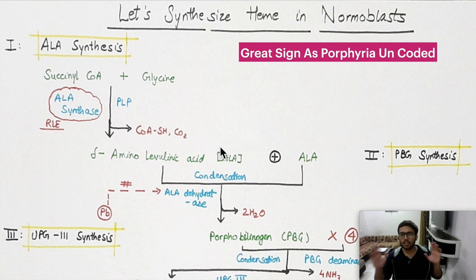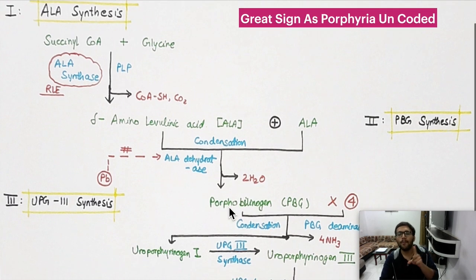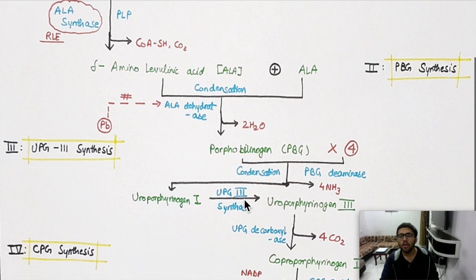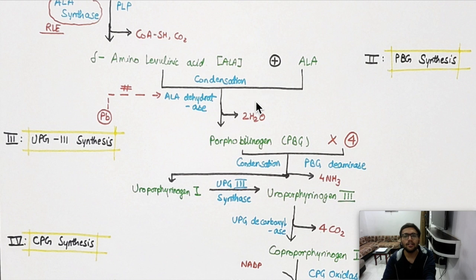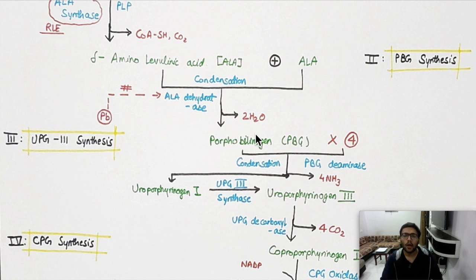From here onwards, you mainly condense whatever you get. Two molecules of ALA are condensed to form porphobilinogen. This condensation involves loss of two water molecules, and the enzyme is ALA dehydratase. Important note: ALA dehydratase is inhibited by lead — a useful exam point.